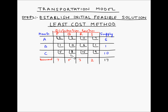On your screen you can see the transportation table which we had created as part of step 1 for solving the transportation model. ABC are the plants or the origins of the supply. PQR and S are the distribution centers and these numbers in the squares are the cost of transporting from each plant to each distribution center. On the extreme right you can see the supply for each of the plants, and at the bottom you can see the demand at each of the distribution centers. The total of the demand and the supply is the same, which is 17 units.